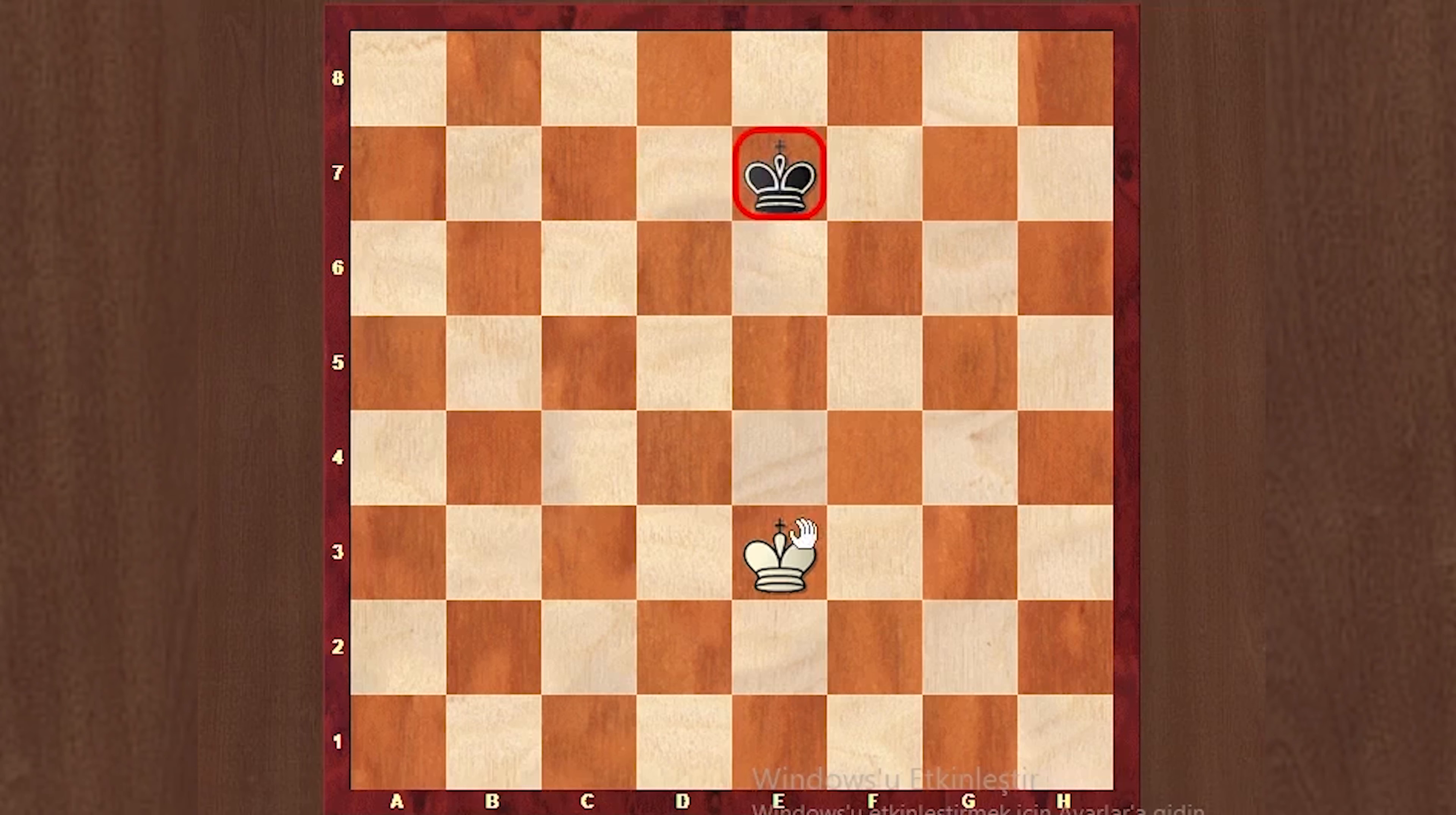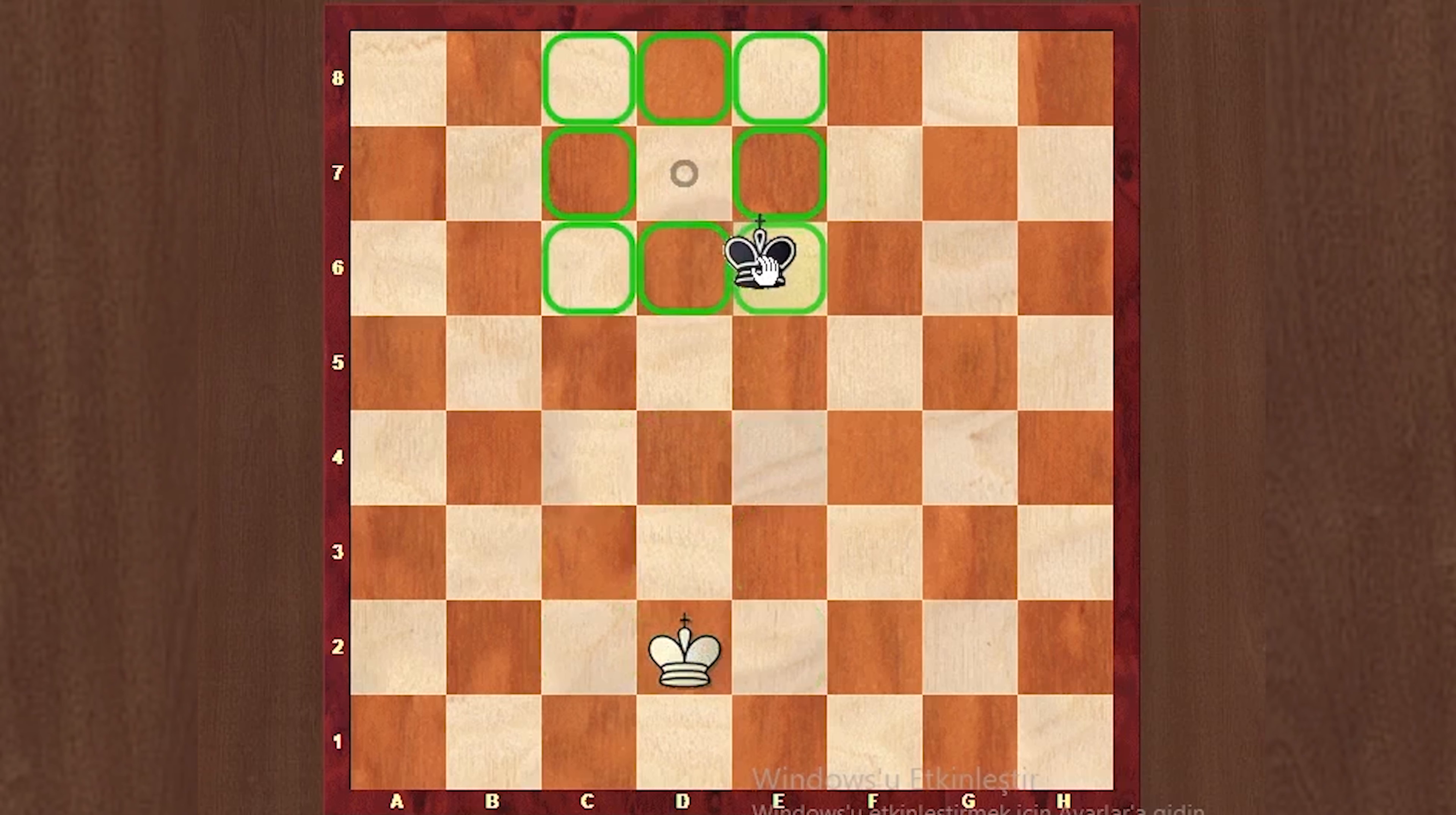The kings can move in any direction, but only if the square next to it is safe. We can say it like this: the king can move to the neighboring squares as long as it is a safe square.